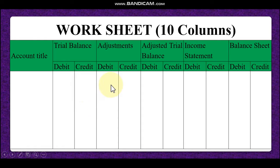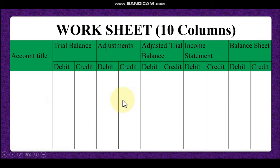And here, adjustment. After recording trial balance, there are some other items we need to adjust — that is the adjustment item. That item will be recorded here. In this column also, asset account will be debited, expense account will be debited, and income, liability, equity account will be credited.